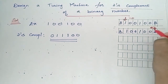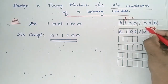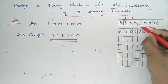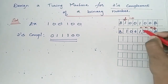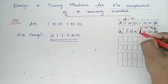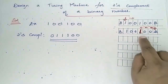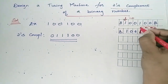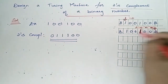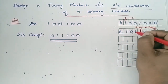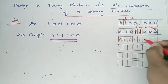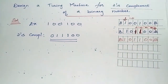Moving left, if it comes across 0's, there is no disturbance — 0 is placed as 0. The first 1 it comes across is placed as 1. Now for the remaining bits, moving further left, the first 0 encountered after the first 1 is changed to 1. My series will now appear accordingly with the tape header positioned here.